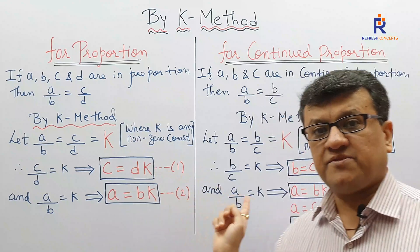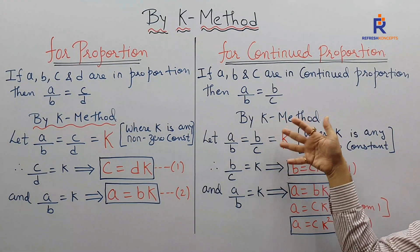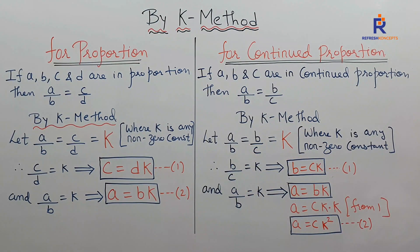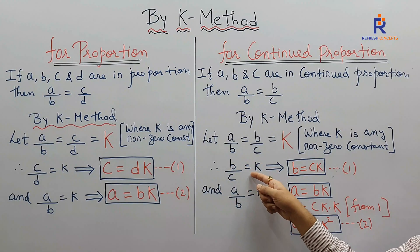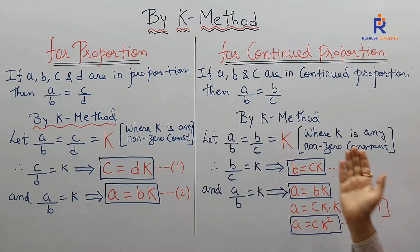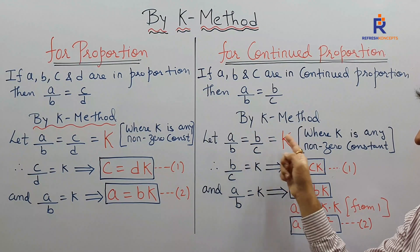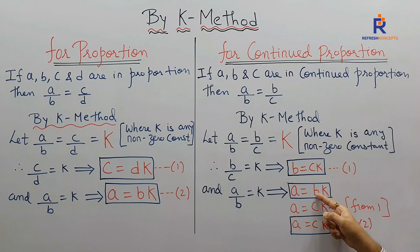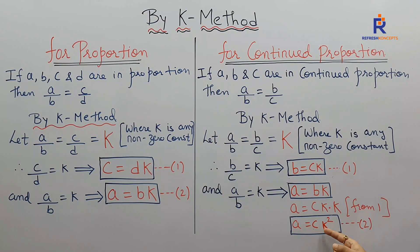Always pick up the extreme right. So B by C equals K; on cross multiplication, B equals CK — equation number one. Then take the extreme left: A by B equals K, which implies A equals BK. But B is already CK, so A equals CK times K.